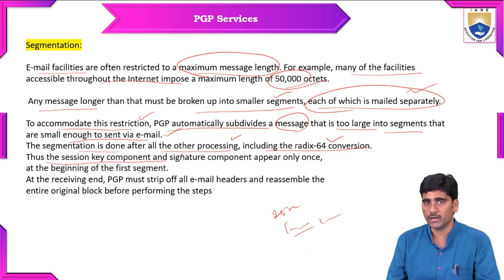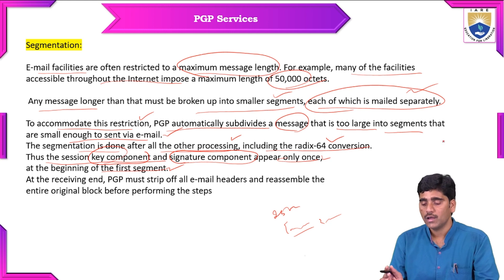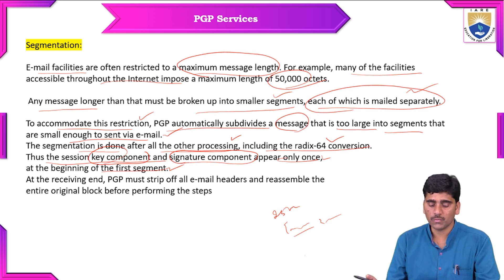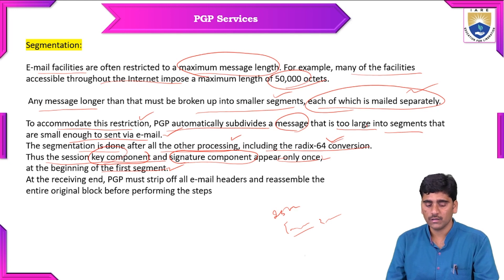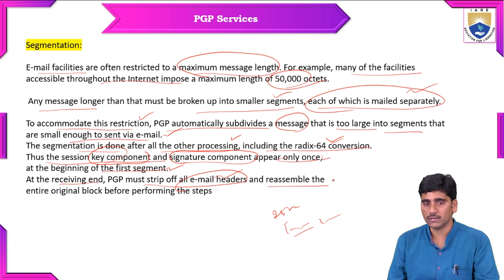The session key component and the signature component appear only once at the beginning of the first segment. Each small segment includes Radix64 conversion and session key and signature components. At the receiver end, PGP must strip off all email headers and reassemble the entire original block before performing the processing steps. Segmentation is required for reducing the size of the maximum message to be sent via email.